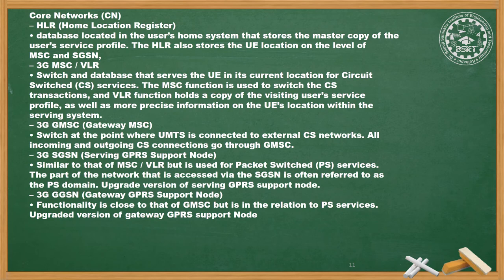The 3G GMSC — Gateway Mobile Switching Center — is the switch at the point where UMTS connects to external circuit-switched networks; all incoming and outgoing CS connections go through GMSC. The 3G SGSN — Serving GPRS Support Node — is similar to MSC/VLR but used for packet-switched services; the part of the network accessed via SGSN is referred to as the PS domain. The 3G GGSN — Gateway GPRS Support Node — has functionality close to that of the GMSC but in relation to PS services, and is an upgraded version of the Gateway GPRS Support Node.